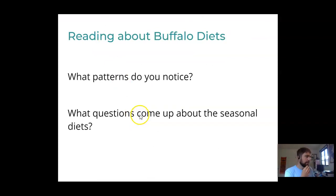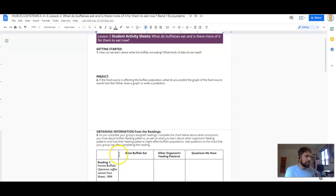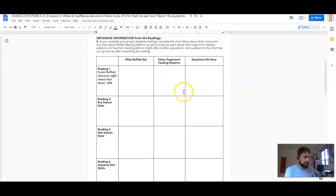Okay, so we're going to break into groups of six, and each of you are going to read a short reading about the buffalo diets. And these are from scientific journals, so they're written by real scientists. And you're each going to give each other the information that you need to fill out the student activity sheet here, obtaining information from the readings.